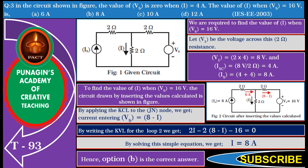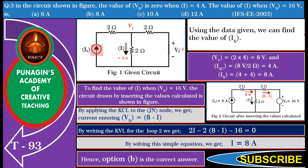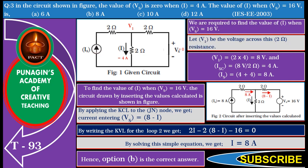To find this value, the given data is the value of Vs equals 0 when I equals 4 amperes. Let F1 be the voltage across the 2 ohm resistance. Using the given data, we can find the value of Is. We find that F1 equals 2 into 4 equals 8 volts, and Isc equals 8 volts divided by 2 ohm equals 4 amperes. So Is equals 4 plus 4 equals 8 amperes.